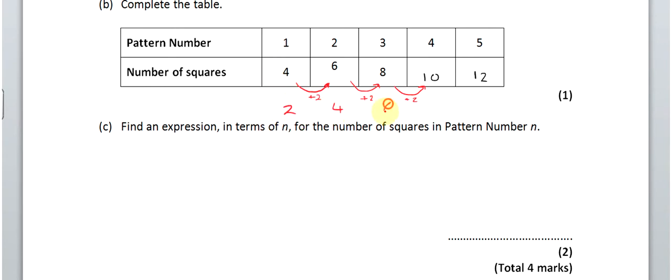2, 4, 6, 8, 10. And then hopefully what you're noticing is that the number of squares is the 2 times table add 2. Notice each time if you add 2, you get that one. So, these numbers here, we can call them the 2 times table add 2 each time. And that's what we write down. We write the 2 times table, or 2n, add 2. And that gets us 2 marks.